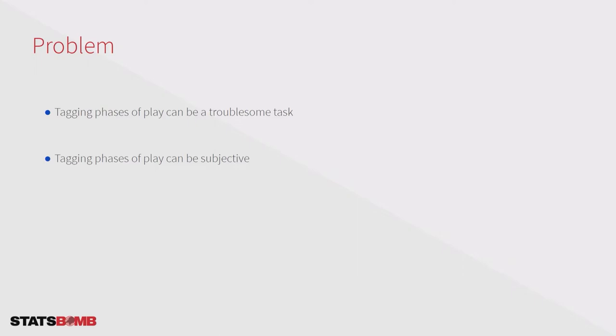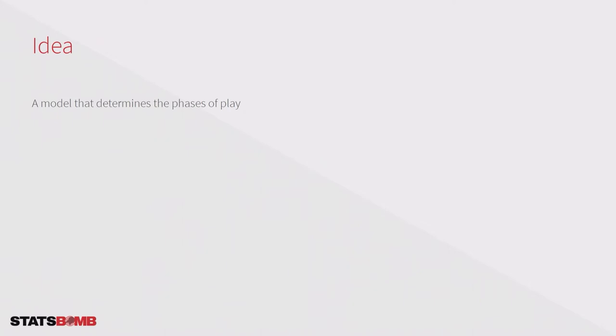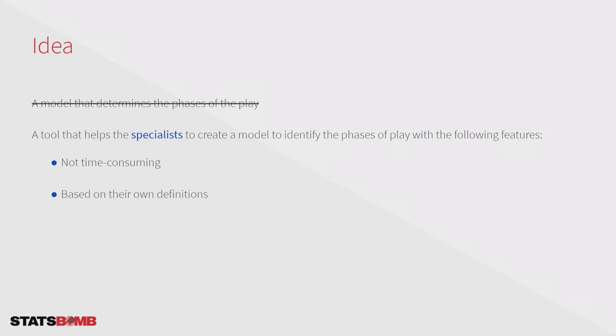Maybe it's because I'm not a specialist. So the two problems I found are that tagging phases of play can be a troublesome and subjective task. My first idea was to develop a model that determines the phases of play, but I decided to change my approach. Now I want to create a tool that helps specialists — for whom identifying phases may be easy — to build a model following two features: first, the tool should not be time consuming; second, the phases of play the model identifies should be based on their own definitions.